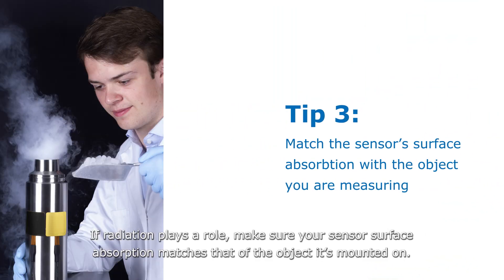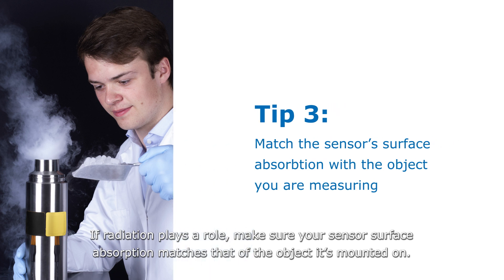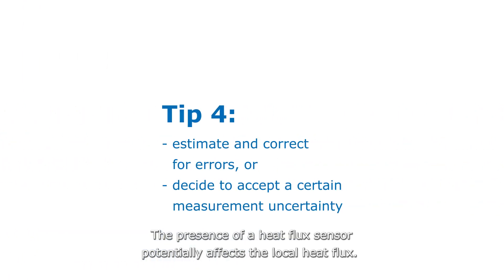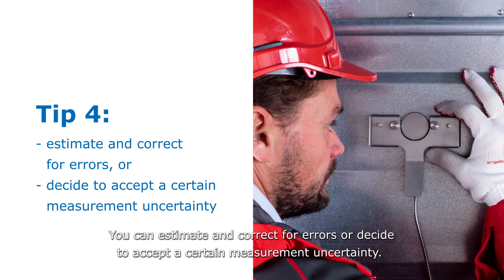If radiation plays a role, make sure your sensor surface absorption matches that of the object it's mounted on. The presence of a heat flux sensor potentially affects the local heat flux. You can estimate and correct for errors, or decide to accept a certain measurement uncertainty.